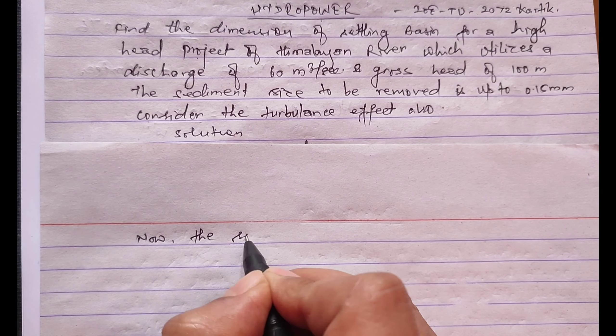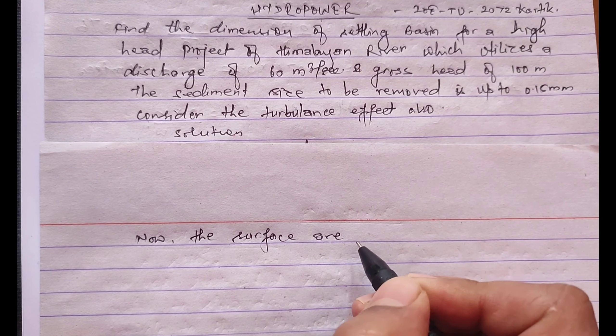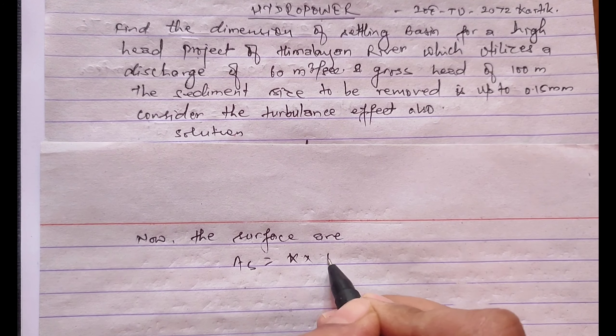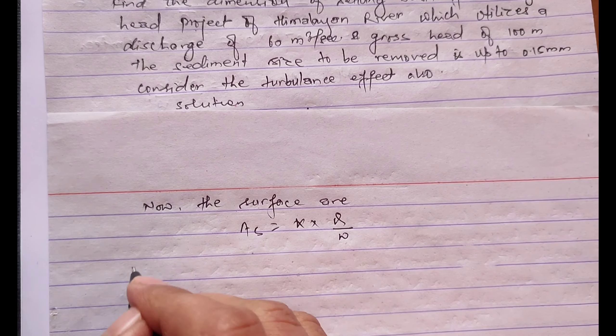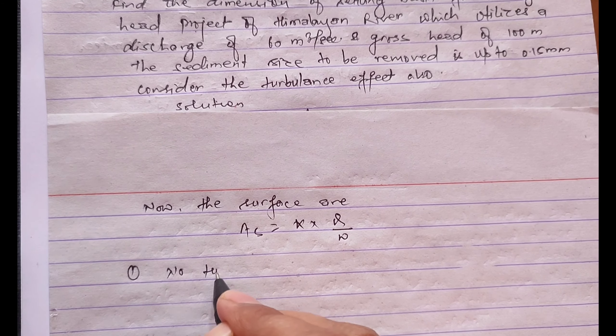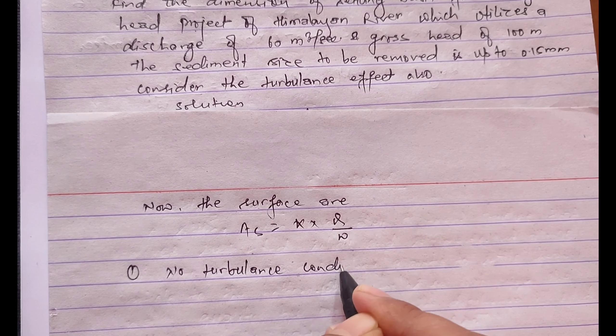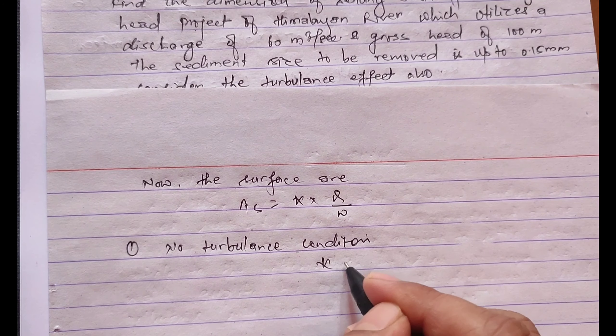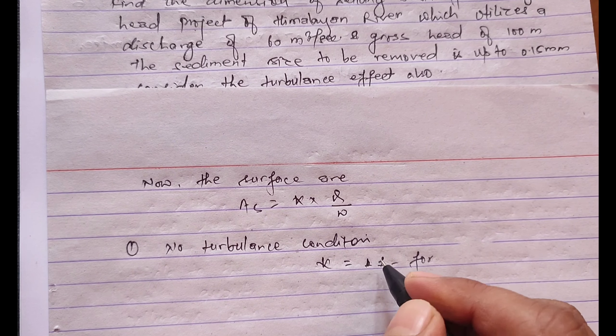Now the surface area of settling basin can be calculated as As equals k times Q divided by w. In case number one we'll take no turbulence condition, where the value of k is equals to 1 for turbulence factor.